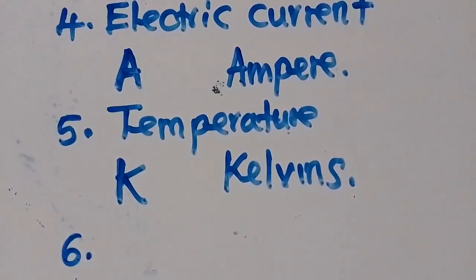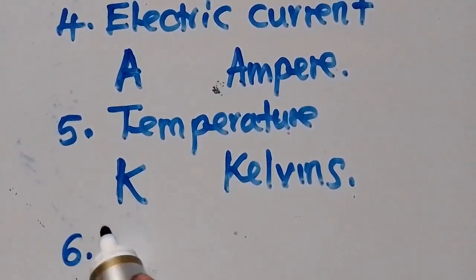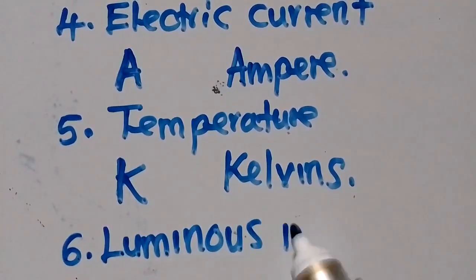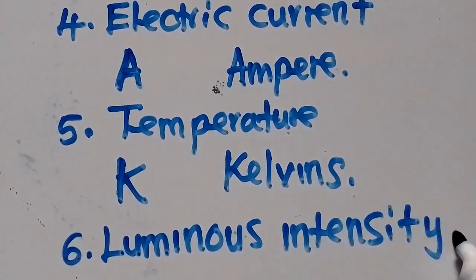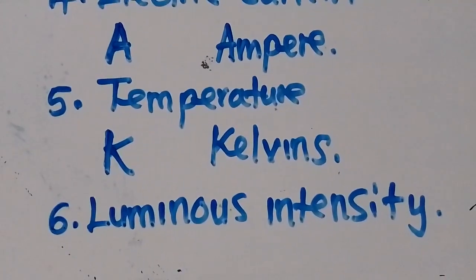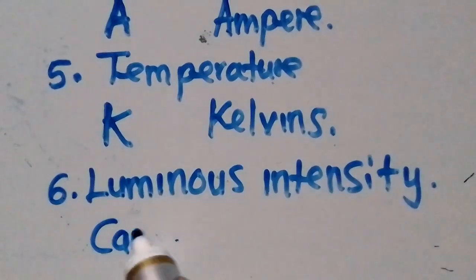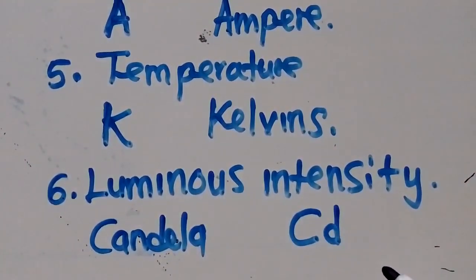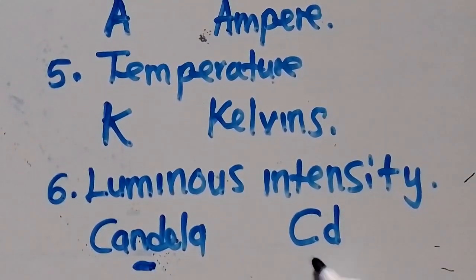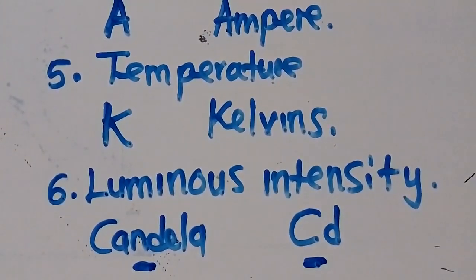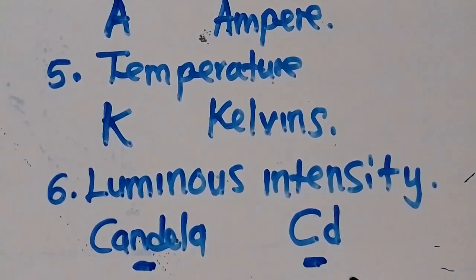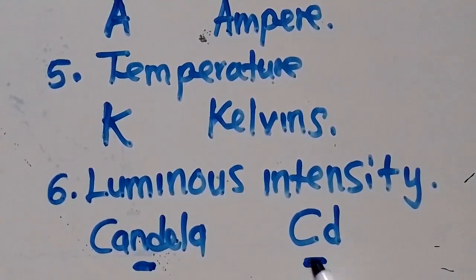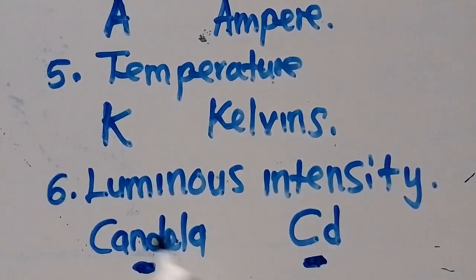The sixth basic quantity is luminous intensity. Luminous intensity is measured in candela. The symbol is capital letter C, small letter D — 'cd'. So don't mistake this. If I tell you to write the symbol for luminous intensity, you write 'cd'. The word is candela. So luminous intensity is measured in candela, symbol CD.